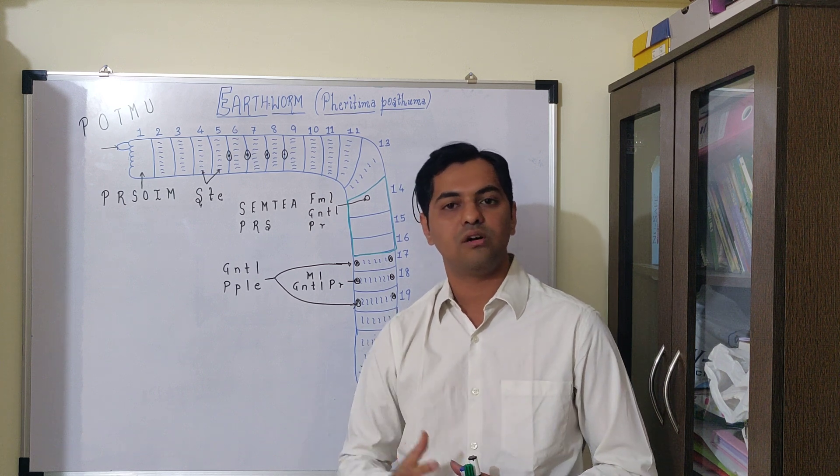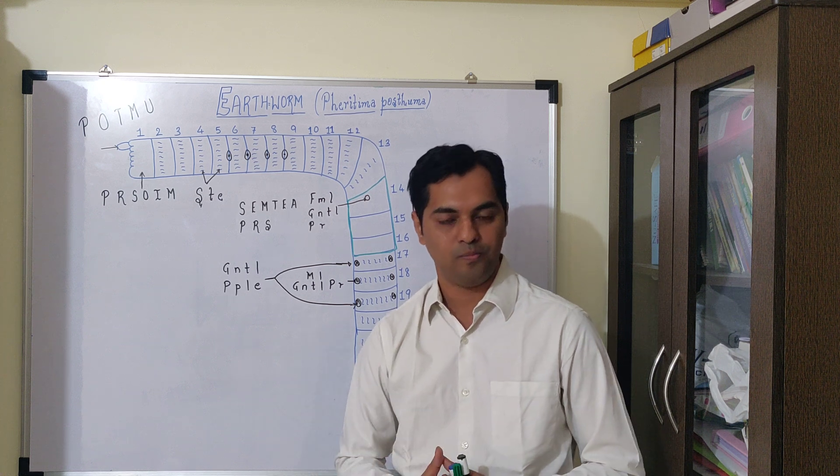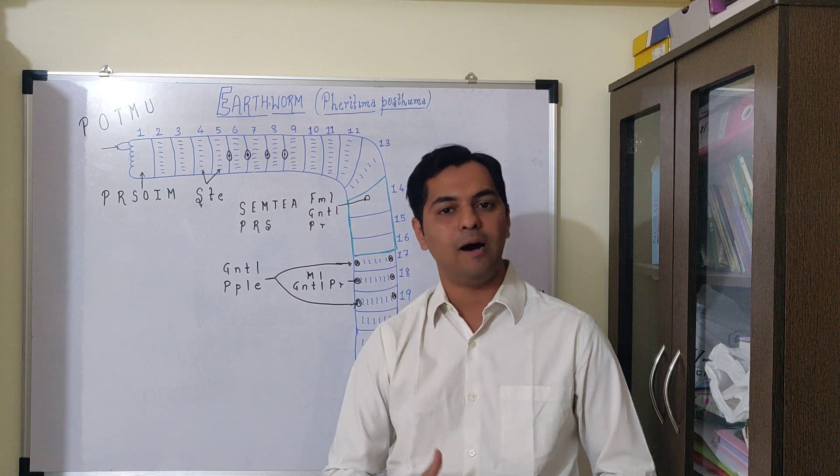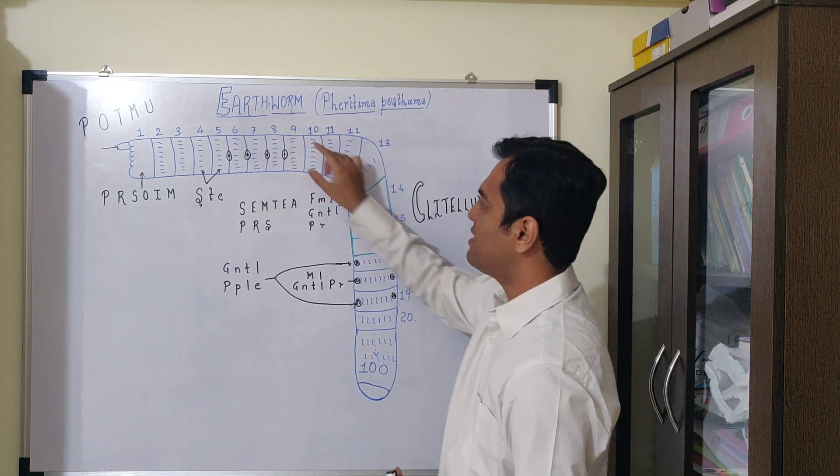There is also another earthworm known as Lumbricus, known as European earthworm. Earthworms belong to the phylum Annelida, which means these are cylindrical and segmented worms.